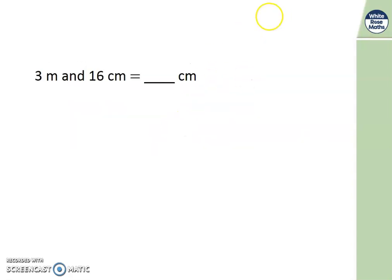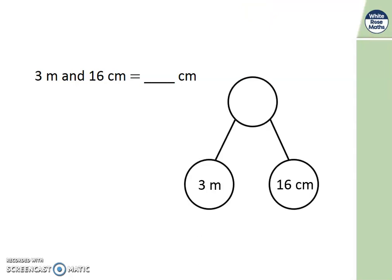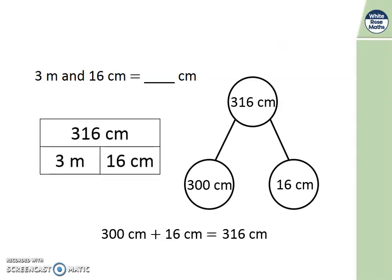What about this one? 3 metres and 16 centimetres. But I want to know it in centimetres only. Let's use the part-whole model and work backwards. We know that 3 metres and 16 centimetres are the parts. 3 metres is 300 centimetres. Therefore, when we add those parts together, that is 316 centimetres altogether. It's made up of 3 metres and 16 centimetres, 316 centimetres altogether.